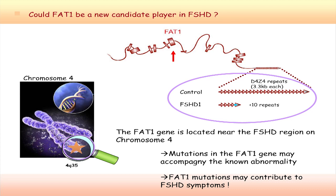So now, could FAT1 be a new candidate player in FSHD? I just want to remind this. The best-known abnormalities located on chromosome 4. But what was very surprising to us was that the FAT1 gene was located a little bit further away on the same chromosome.